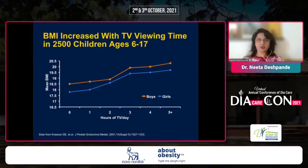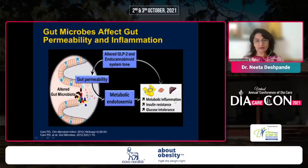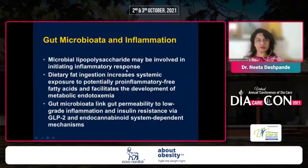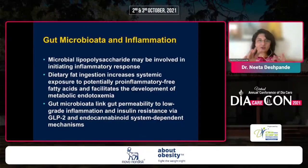Another dimension is gut microbes — they affect gut permeability and in turn cause metabolic inflammation, insulin resistance, and glucose intolerance. Microbial lipopolysaccharide may be involved in initiating these inflammatory responses. Dietary fat ingestion causes a potentially pro-inflammatory free fatty acid environment and facilitates development of metabolic endotoxemia — that is the connection between gut microbiota and inflammation.